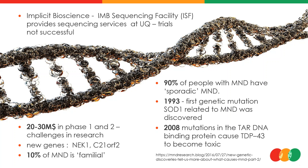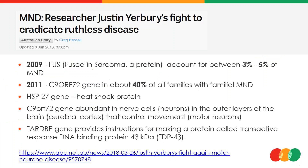In recent decades, many more genes have been identified, including TARDBP/TDP-43, C21ORF2, and others. There are organizations like Implicit Bioscience that have sequencing facilities to identify particular gene SNPs. 90% of MND patients have sporadic MND. The gene marker C9ORF72 is found in about 40% of families with familial MND. A lot of money is being spent, and a number of phase 2 trials are currently in place.